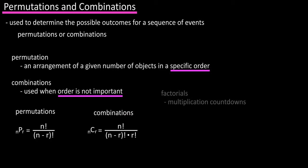As a quick review, factorials are basically multiplication countdowns. For instance, 5 factorial equals 5 times 4 times 3 times 2 times 1. An 11 factorial is written out on the screen, and a 0 factorial is equal to 1.